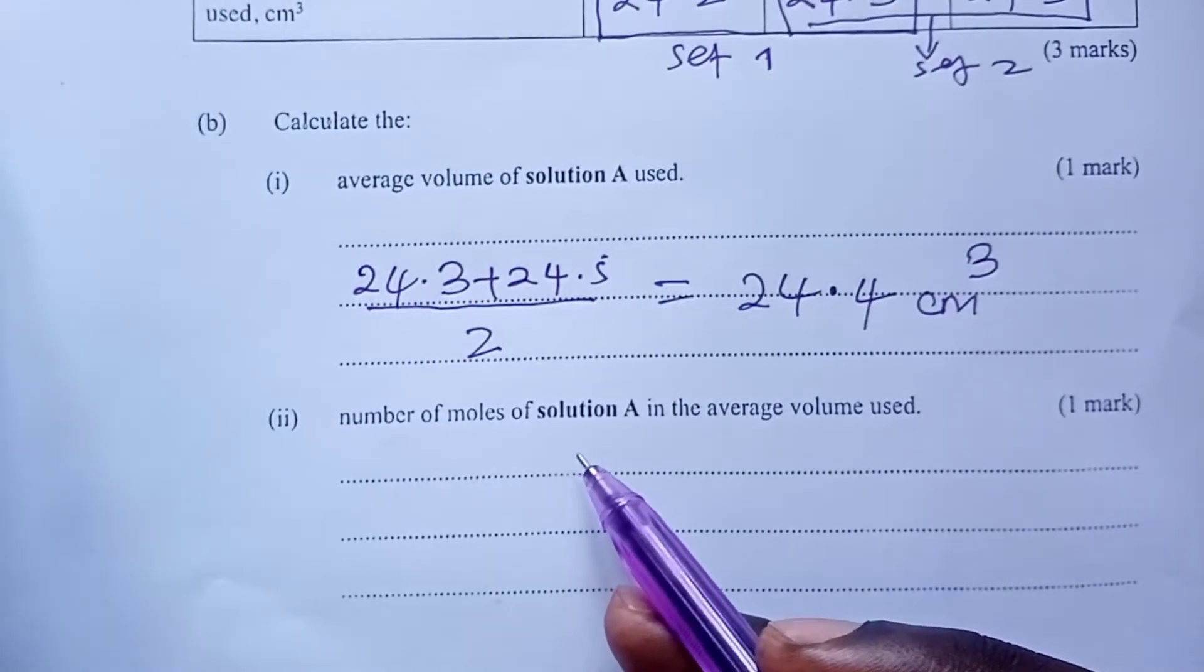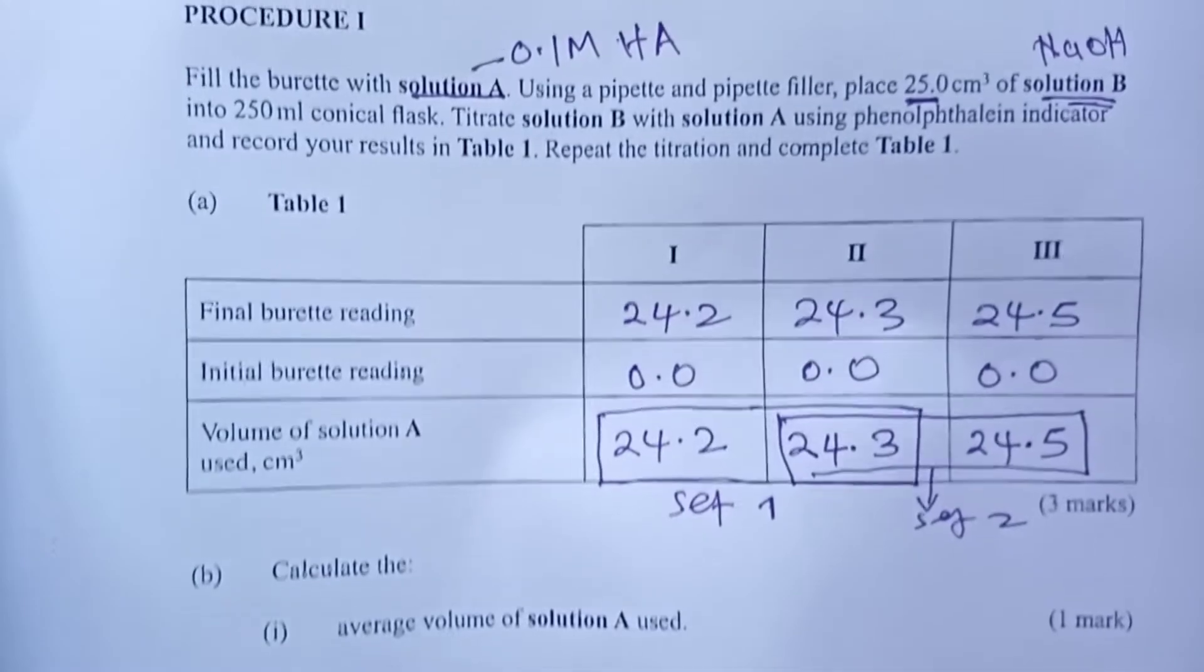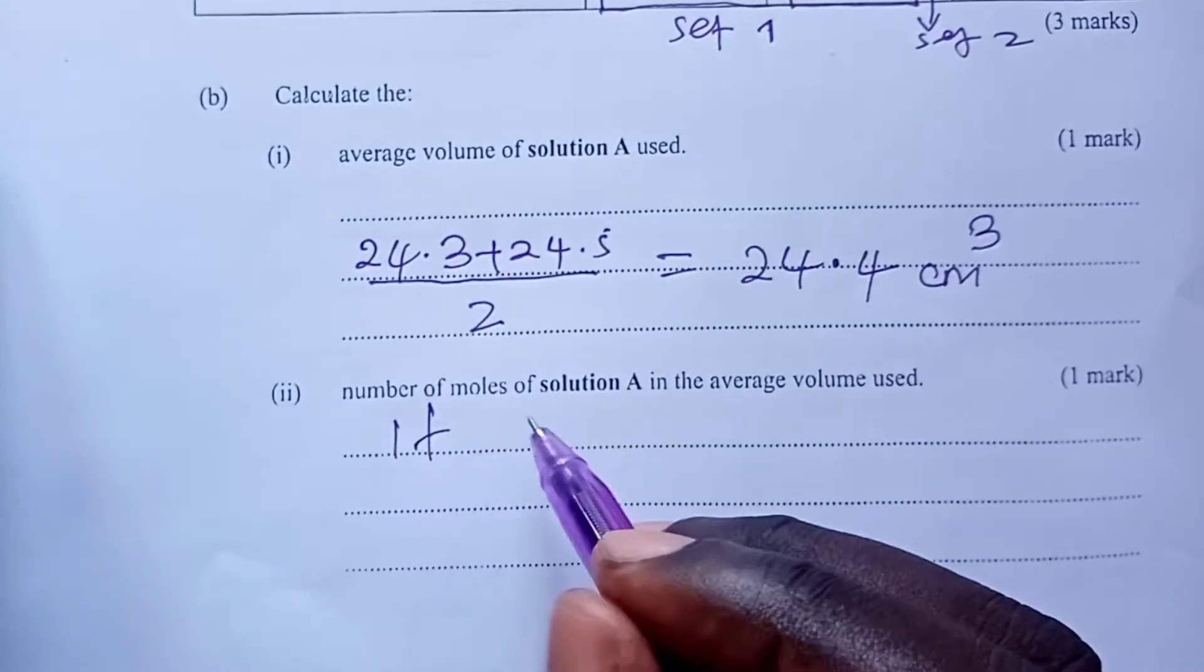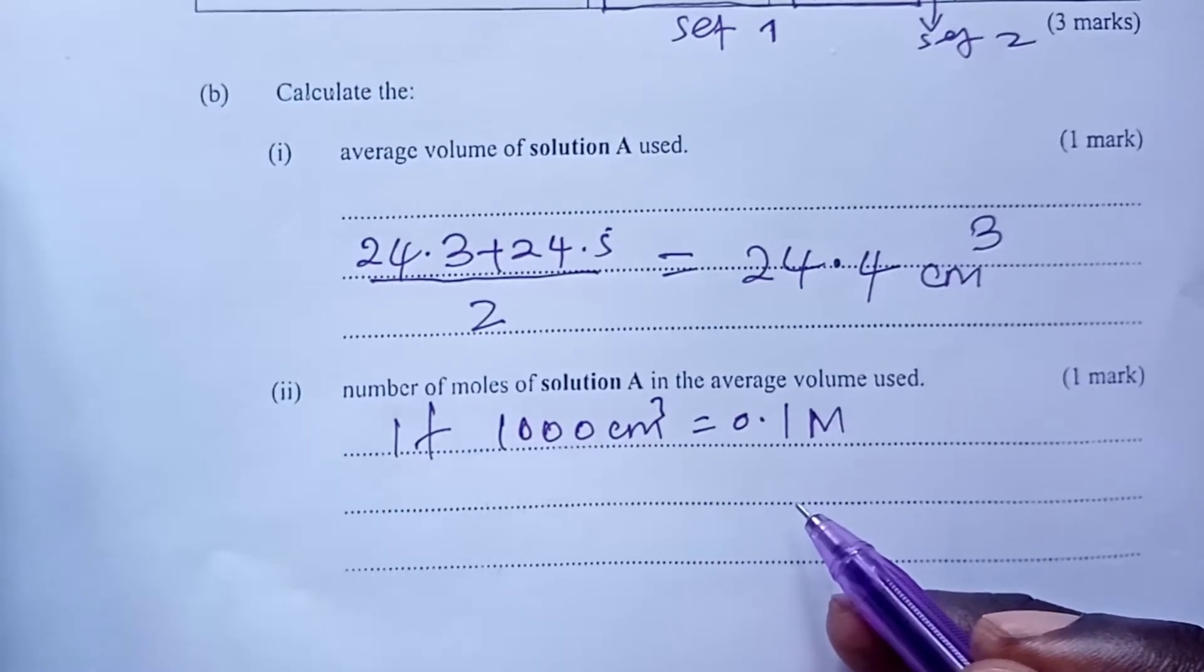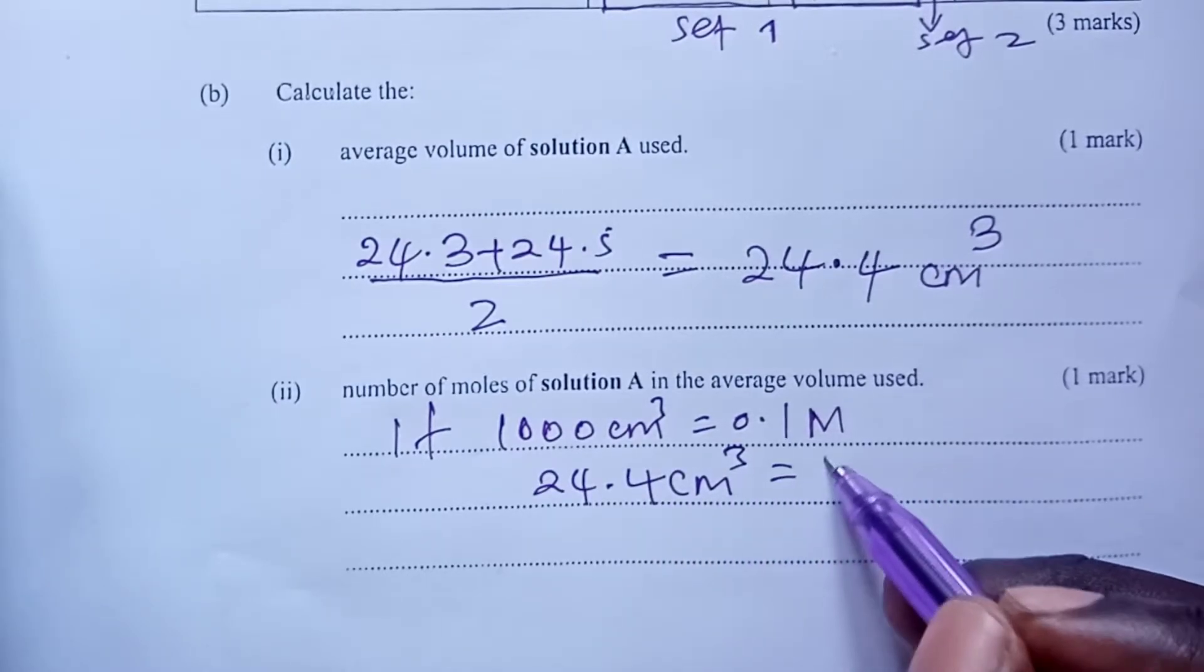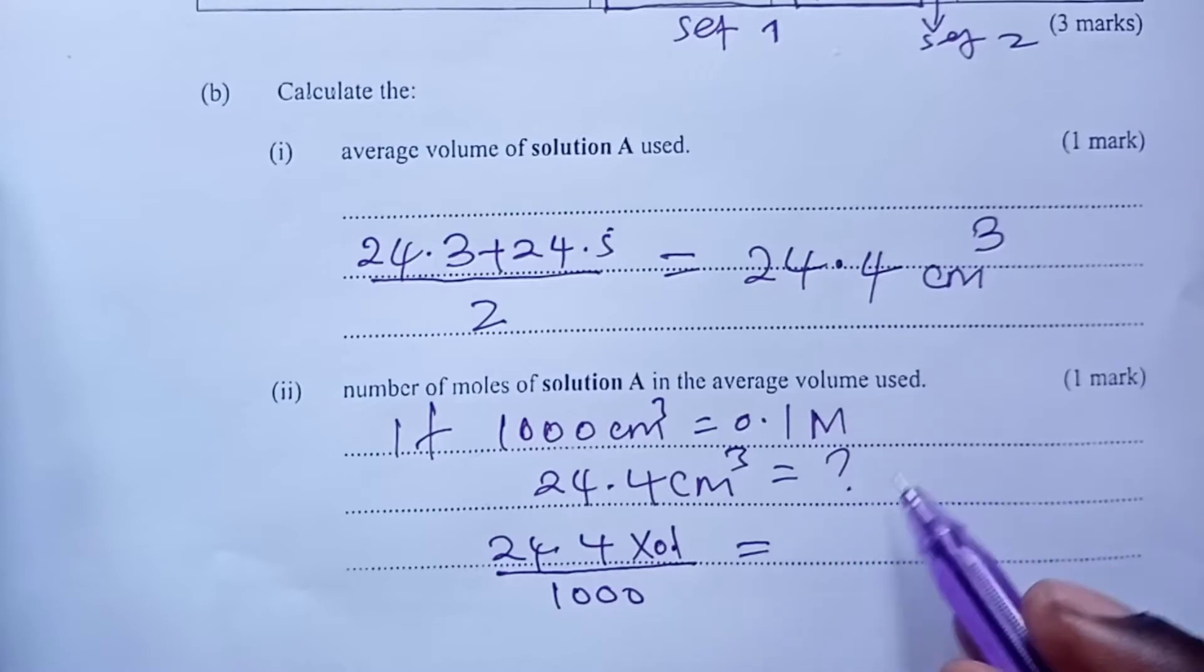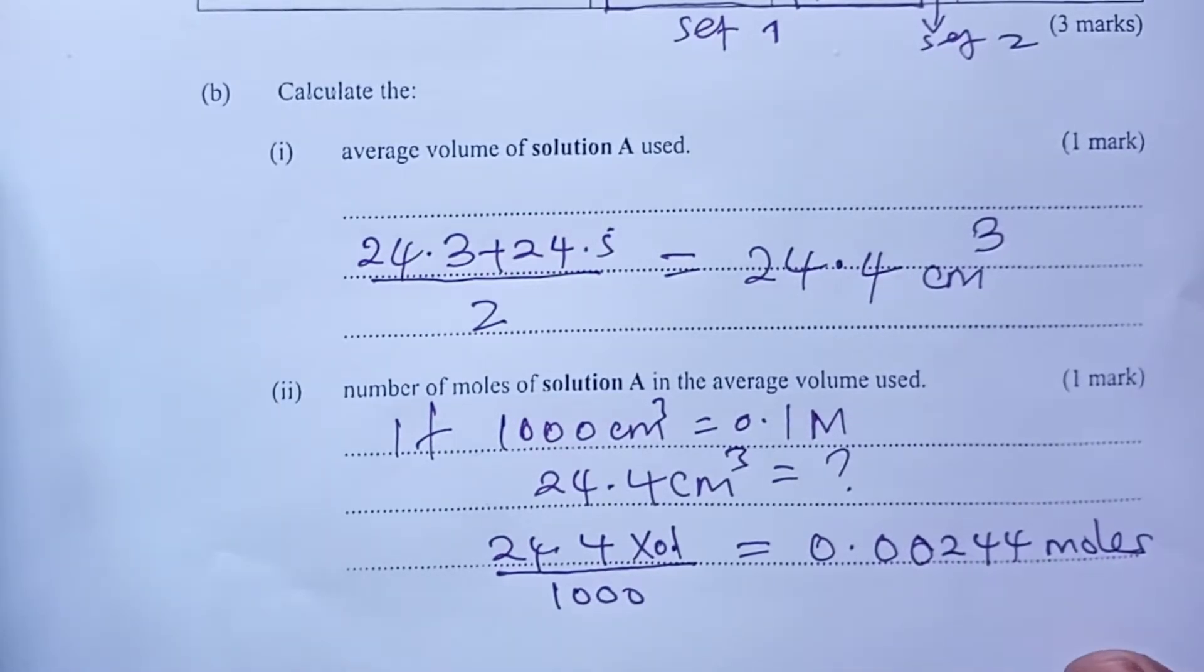Now, number of moles of A in the average volume used. Remember A, A that we had was a 0.1 molar monobasic acid. So, 0.1 moles were present in one liter of solution. So as usual, we practice with first principle approach. So we had 0.1 molar being present in a liter of our solution. But for the titration, we have just used 24.4 cubic centimeter. So how many moles would be here? Now, cross multiplication gives us 24.4 times 0.1 divided by 1,000. And you get answer 0.00244 moles. Good for page one.